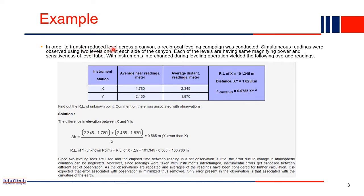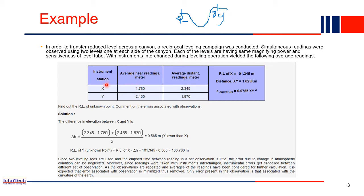Let's solve an example. The question is: to transfer the reduced level (RL) across a canyon, a reciprocal leveling campaign was conducted. You have a point X on one side and a point Y on the other side of the canyon, with the RL of X known. Two levels of the same magnifying power are used simultaneously, one at each end, with the instrument interchanged — meaning the same instrument is used from both sides.